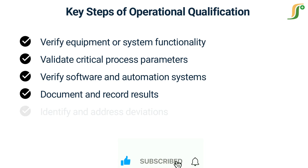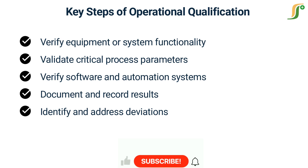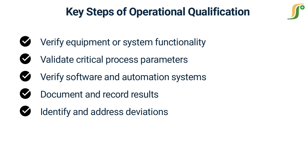Step five: Identify and address deviations. During OQ, any deviations or discrepancies from the predefined specifications or acceptance criteria are identified and addressed through investigation, corrective actions, and documentation. This ensures that any discrepancies are appropriately resolved, and the equipment or system is brought into compliance with the predefined specifications.